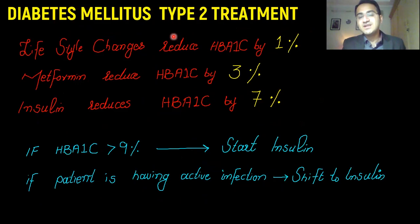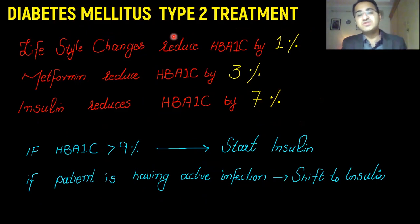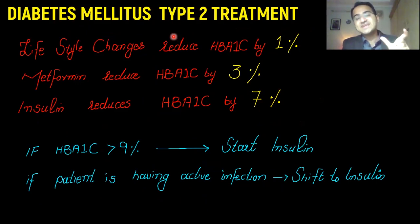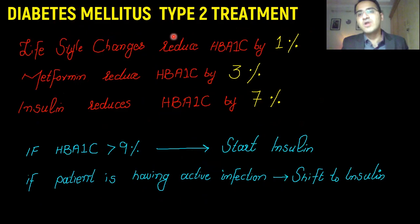If a diabetic patient is admitted to hospital for any active infection and is on oral medications, you must shift that patient to insulin until the active infection is treated. When the active infection is treated, you shift the patient back to oral hypoglycemic drugs.